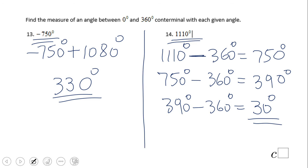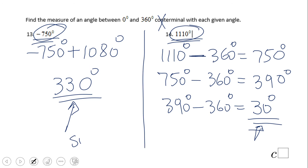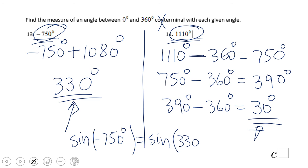Why do we need co-terminal angles? Because whenever you want to evaluate sine or cosine of an angle like negative 750 degrees, you use the co-terminal angle — it's much easier to find sine or cosine of 330 degrees using the unit circle. If you enjoyed this video clip, don't forget to click the like button and come back to C-Square for more math video clips. Thank you!